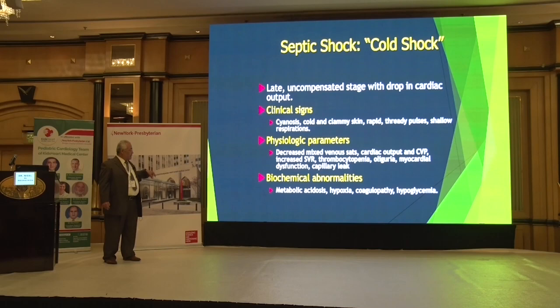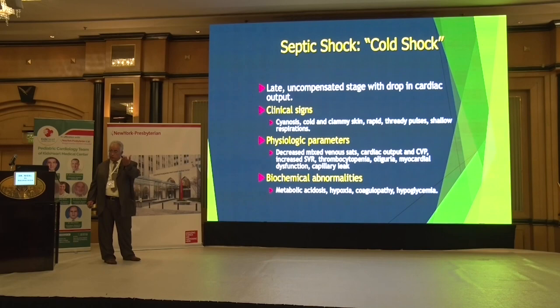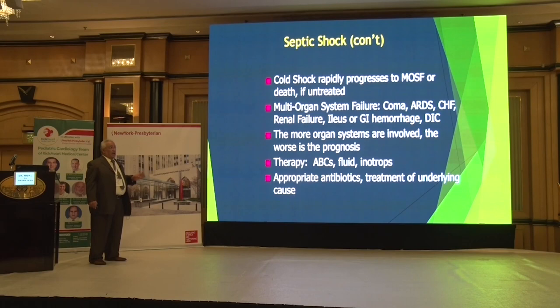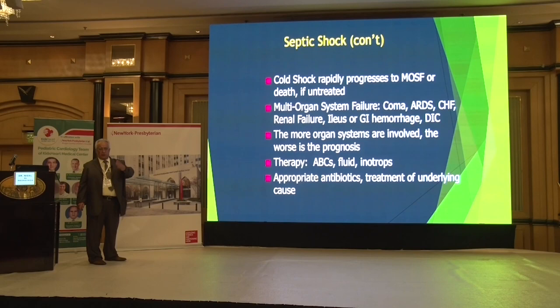There may also be capillary leak and biochemical abnormalities: metabolic acidosis, hypoxia, coagulopathy, and hypoglycemia — unlike the warm shock where blood pressure was relatively preserved due to stress. If you don't treat rapidly, it will progress to multi-organ system failure, even death. Any organ system involved increases your mortality by 10%.